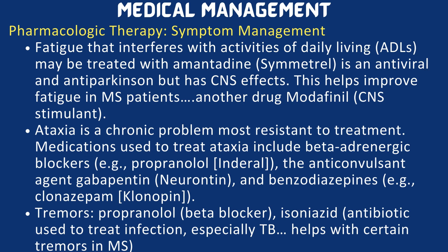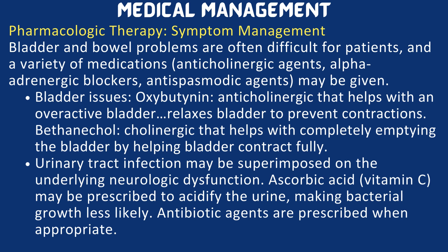Tremors are treated by propranolol, a beta blocker, and isoniazid — an antibiotic used to treat infections especially TB — which also helps with certain tremors in multiple sclerosis. Bladder and bowel problems are often difficult for patients, and a variety of medications including anticholinergic agents, alpha-adrenergic blockers, and antispasmodic agents may be given. For bladder issues, oxybutynin is given — it is an anticholinergic that relaxes the bladder to prevent contractions and helps with an overactive bladder. Bethanechol is a cholinergic that helps with completely emptying the bladder by helping it contract fully. Urinary tract infections may occur, so ascorbic acid (Vitamin C) may be prescribed to acidify the urine making bacterial growth less likely, and antibiotic agents are prescribed when appropriate.